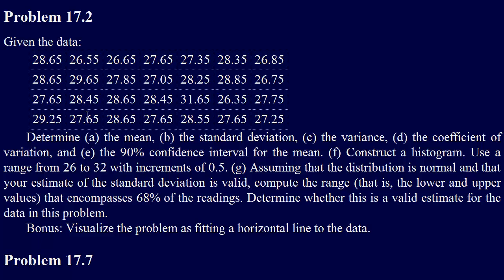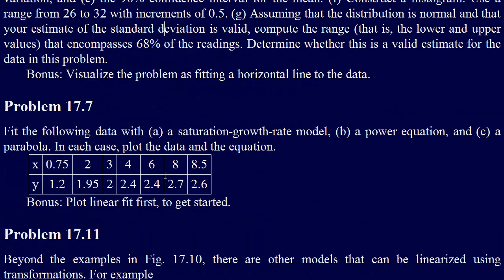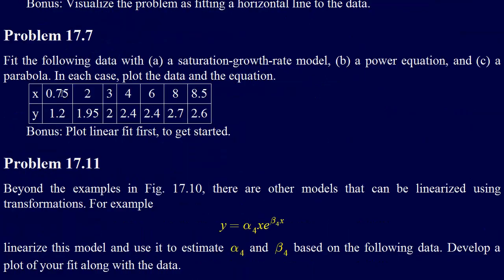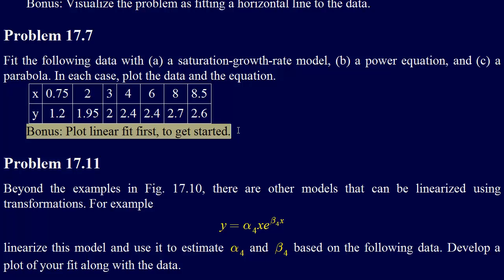We did problem 17.2, and now we're going to move on to problem 17.7. This problem says fit the following data with A, a saturation growth rate model, B, a power equation, and C, a parabola. In each case, plot the data and the equation. There's the data, and as a bonus, I'm going to go ahead and do a linear fit first to get us started.